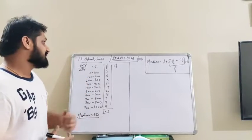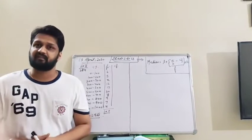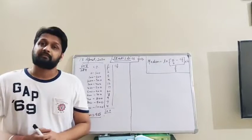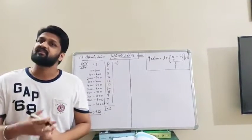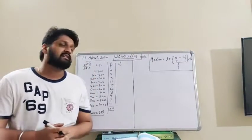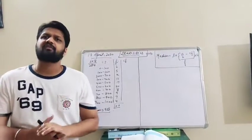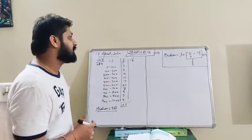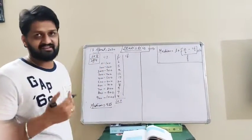Good morning students. As we know, our topic statistics is going on and we have already discussed the mean by three methods: mean, mode, and by mean we have discussed direct method, assuming method, and step deviation method. We have also discussed about mode, and now we are doing the third measure of central tendency — how to find the median. In the previous video we already did one question, and now we are doing Example number 8 on page 284.